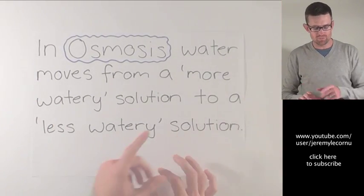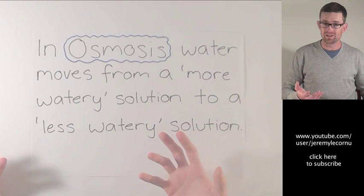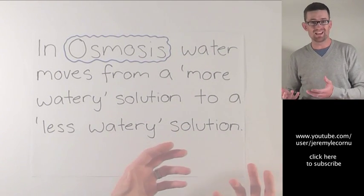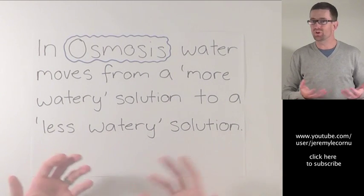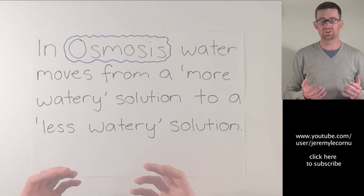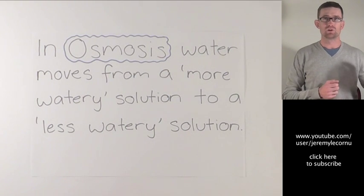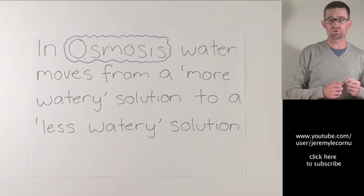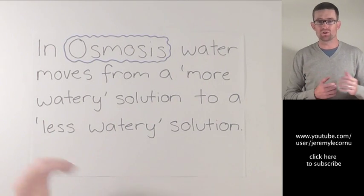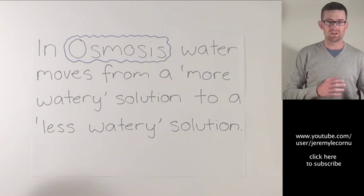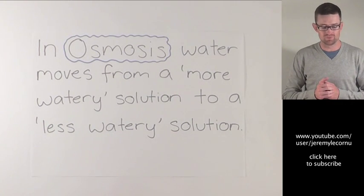In osmosis, water moves from a more watery solution to a less watery solution. It's as simple as that. We don't need to use the term concentration. We can just think about where is the solution more watery, where is the solution less watery, and that will help us work out which direction water is moving.